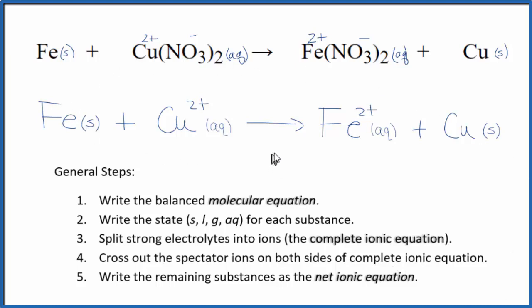So this is the net ionic equation for Fe plus Cu(NO3)2. Iron plus copper two nitrate. We have the solid iron plus the copper ion. That gives us the iron ion plus solid copper. This is Dr. B. And thanks for watching.